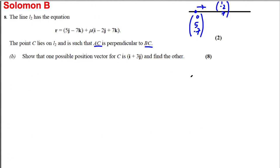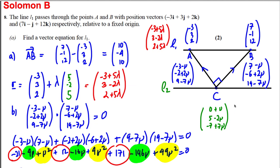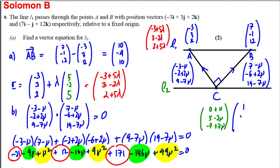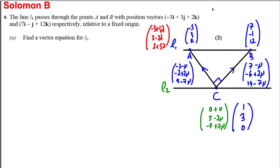Now we find the area of triangle ABC, assuming C = (1, 3, 0). The area is ½ × base × perpendicular height. Taking AB as the base and AC as the perpendicular height, we need the lengths of BC and AC.